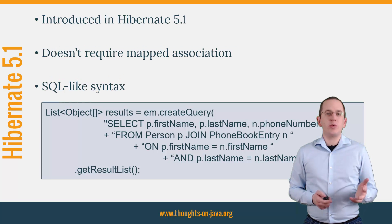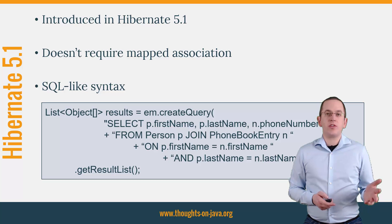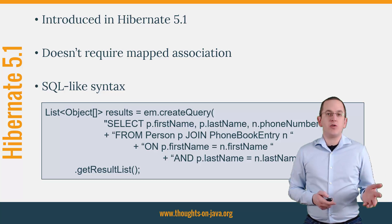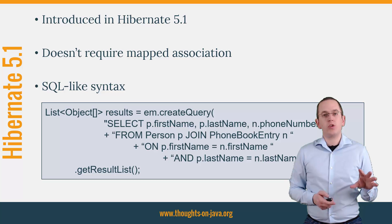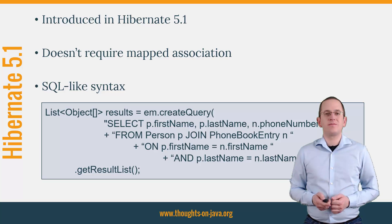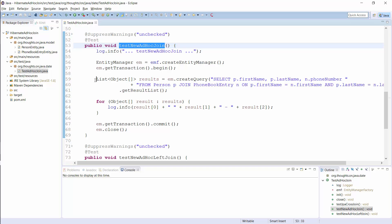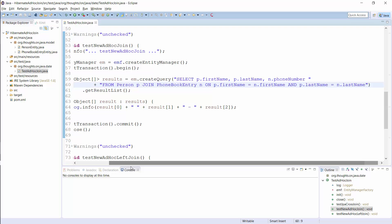Hibernate 5.1 introduced explicit joins on unrelated entities to fix these issues. The syntax and behavior are similar to SQL join statements as you can see in the code snippet. Instead of referencing the attribute which defines the association between the two entities, you have to reference the second entity which you want to join and define the join criteria in the on part of the clause. Here you can see the same query as I showed you on the slide — it uses an inner join to join the person and the phonebook entry entity and defines the join criteria in the on clause.